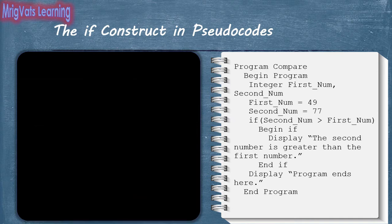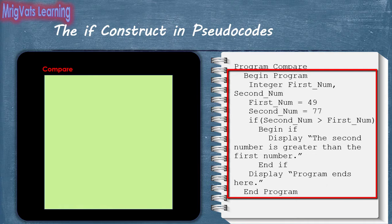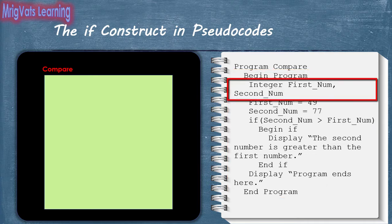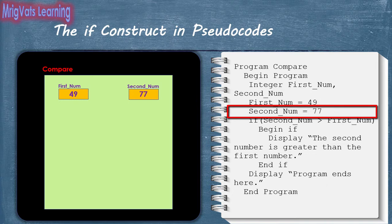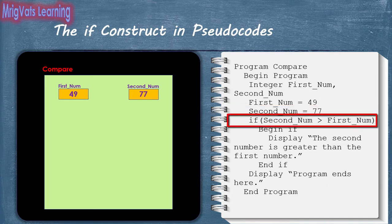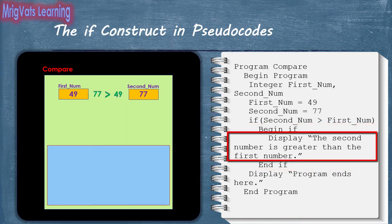Let us now summon our virtual memory board and evaluate the program with a dry run. As soon as you run the Compare program, the computer reserves a memory block for the program enclosed between the Begin Program and End Program statements. With the integer statement, the program declares and creates two variables, first_num and second_num, of integer type at random locations within the memory block. When the next statements are run, 49 is assigned to first_num and 77 is assigned to second_num. As soon as the if statement is run, it compares the values of the first_num and second_num variables. If the expression evaluates to true, the program allocates a section of memory to the body of the if construct and the control moves to the body of the if statement.